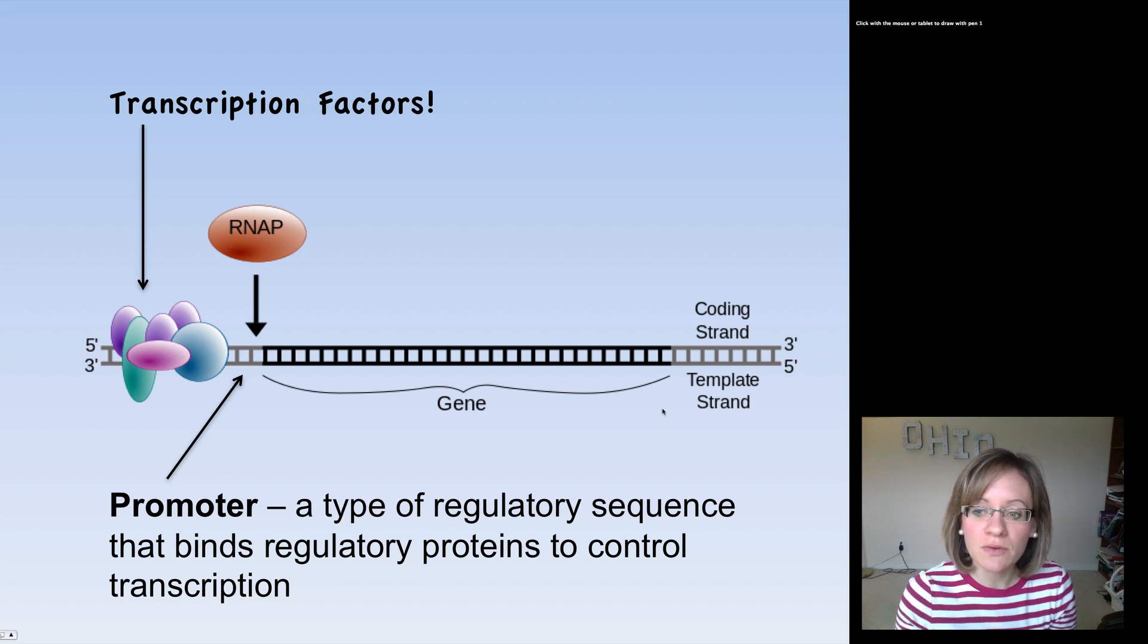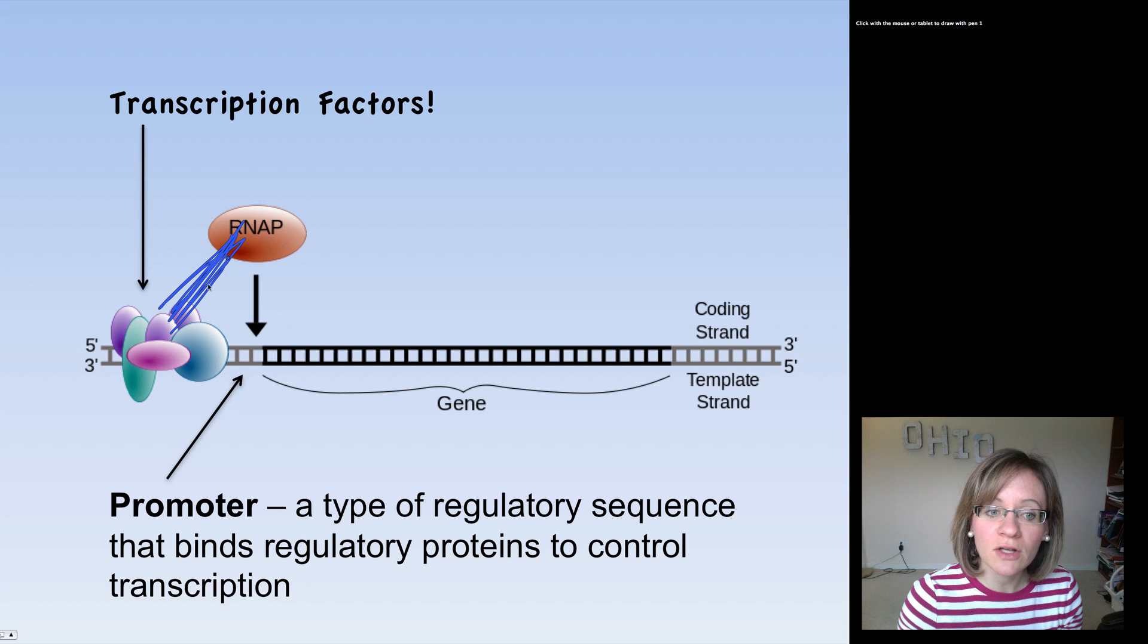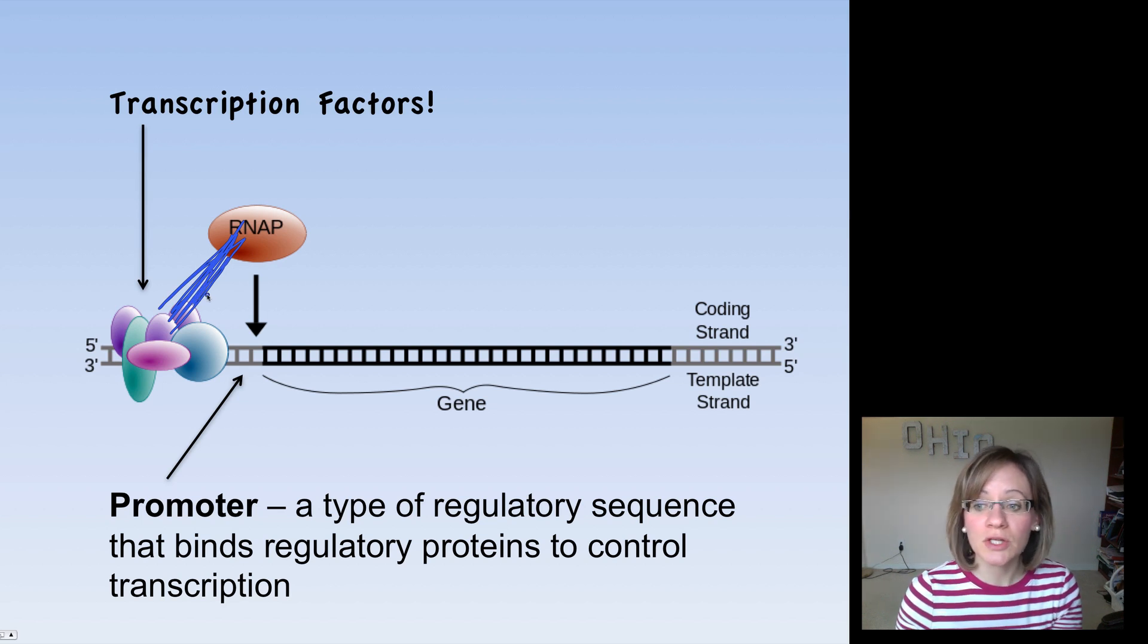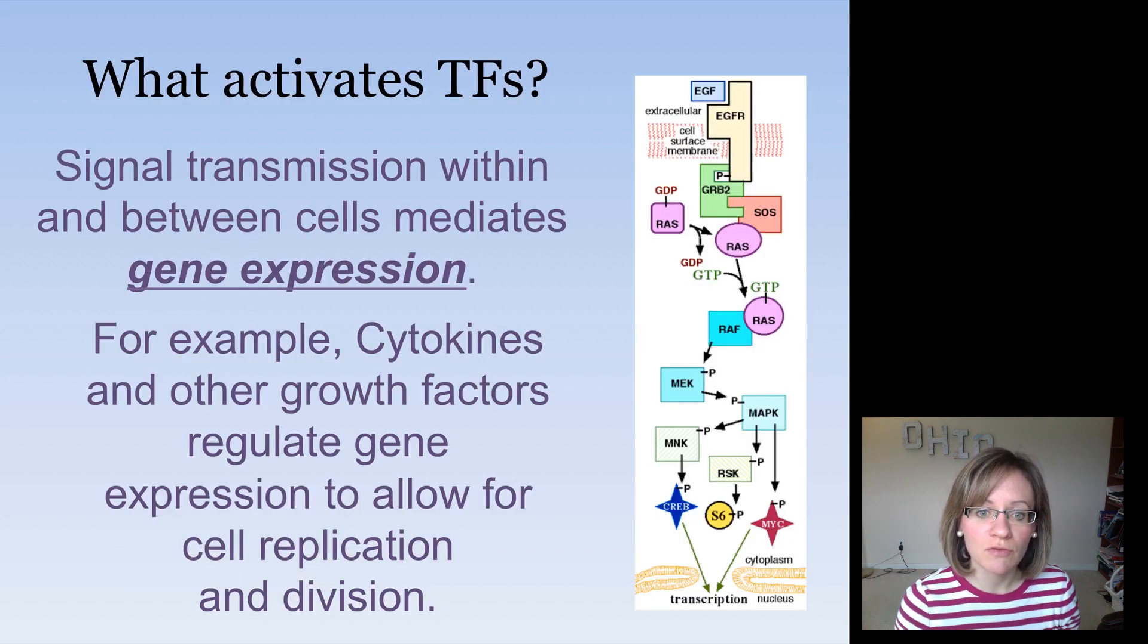So here's just a small figure showing you this. So here's the DNA strand, this is the gene. Here's the promoter here. Remember, this is where the RNA polymerase binds. It's a regulatory sequence that controls transcription. And then up here, we've got these transcription factors that are going to interact very closely with RNA polymerase to either help it bind or to inhibit it from binding. So that's one way that eukaryotes can control transcription using transcription factors.